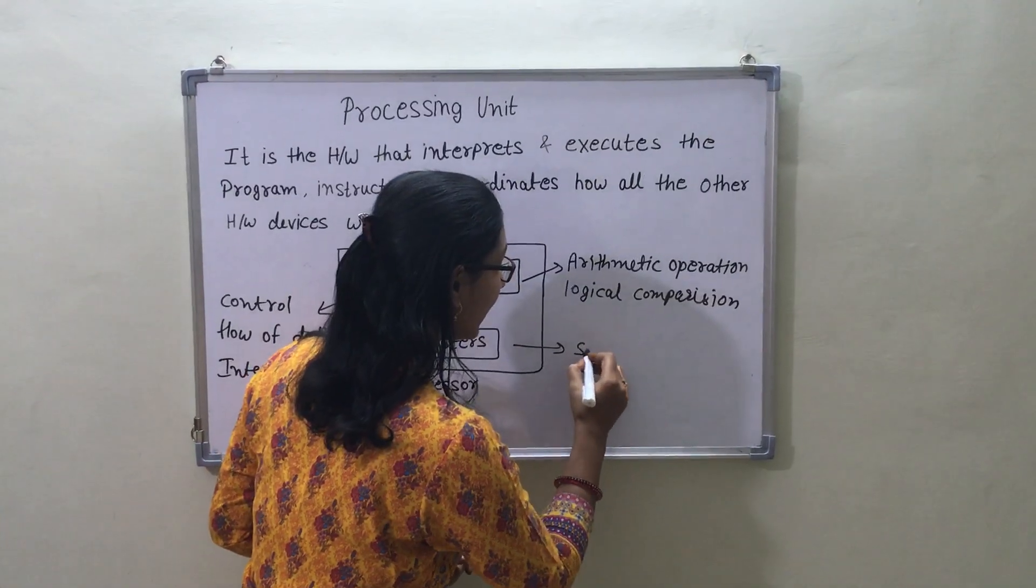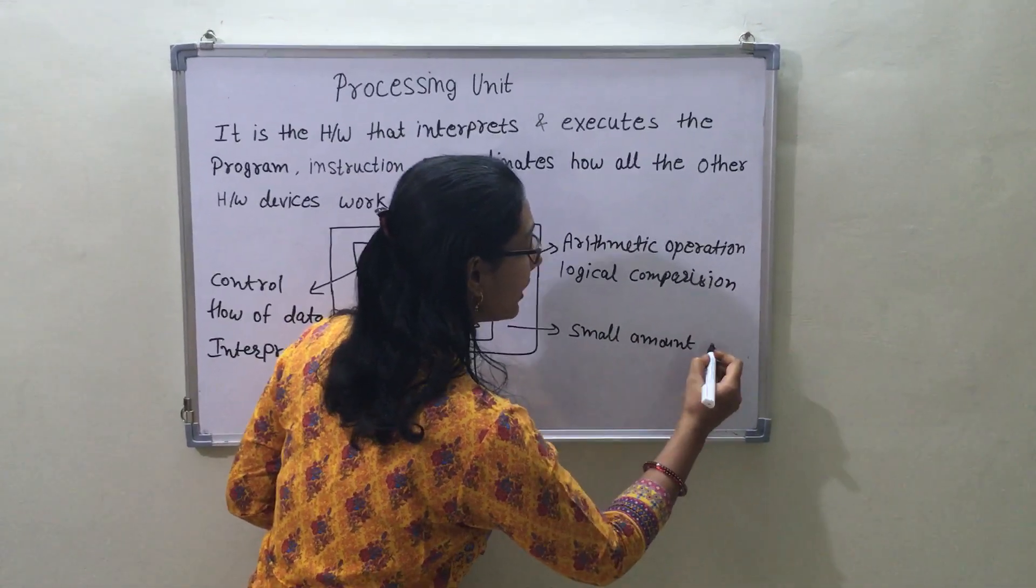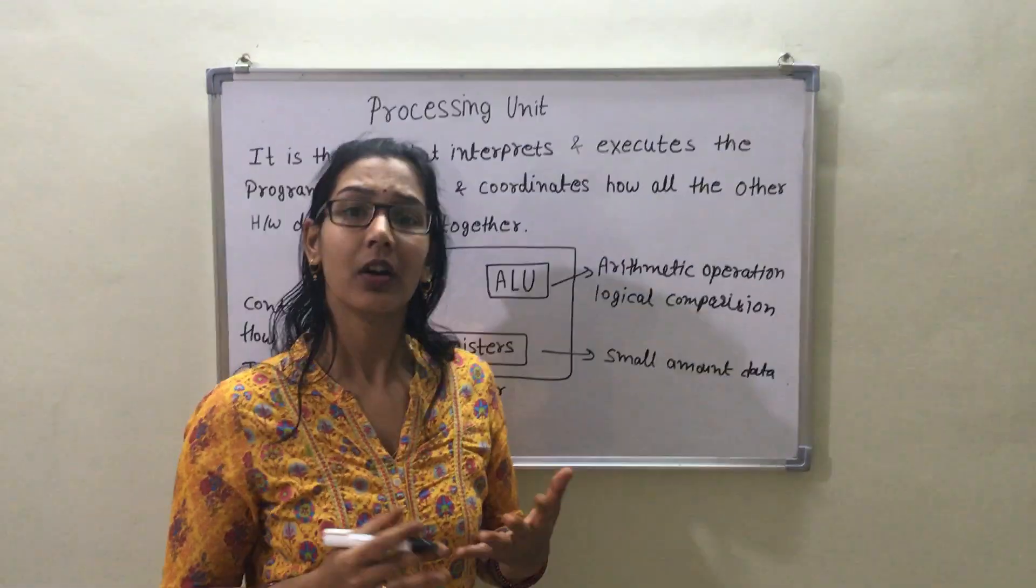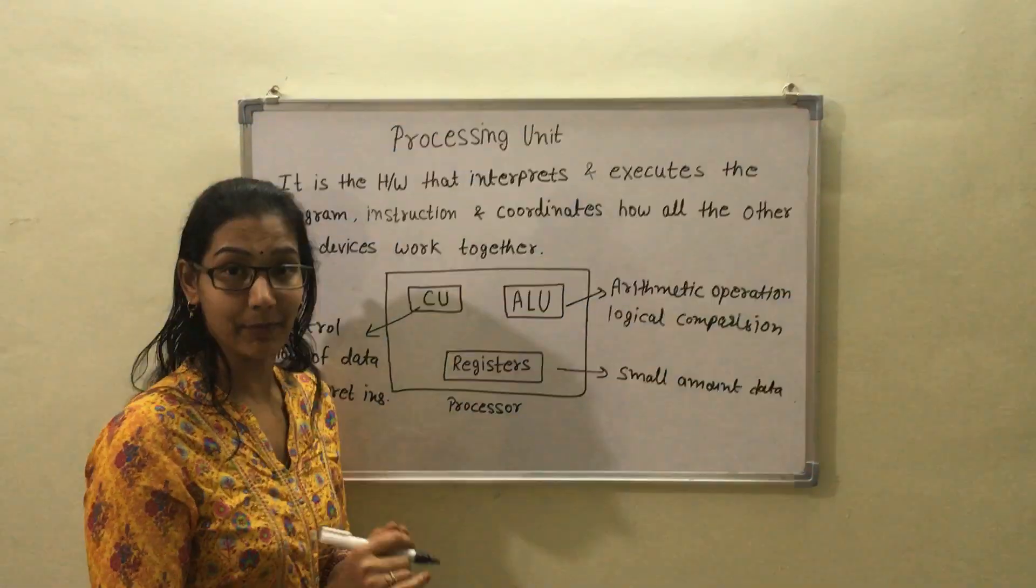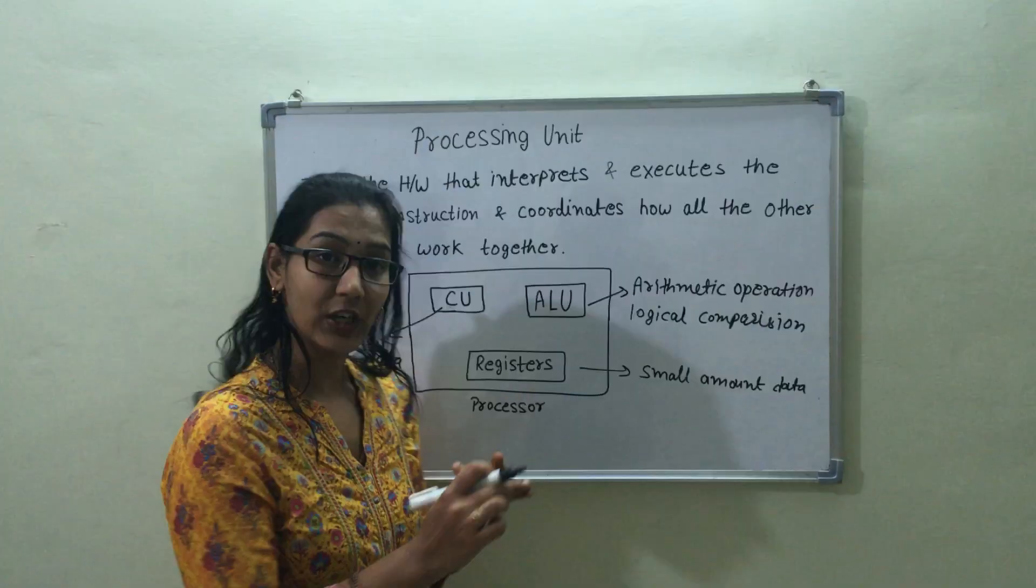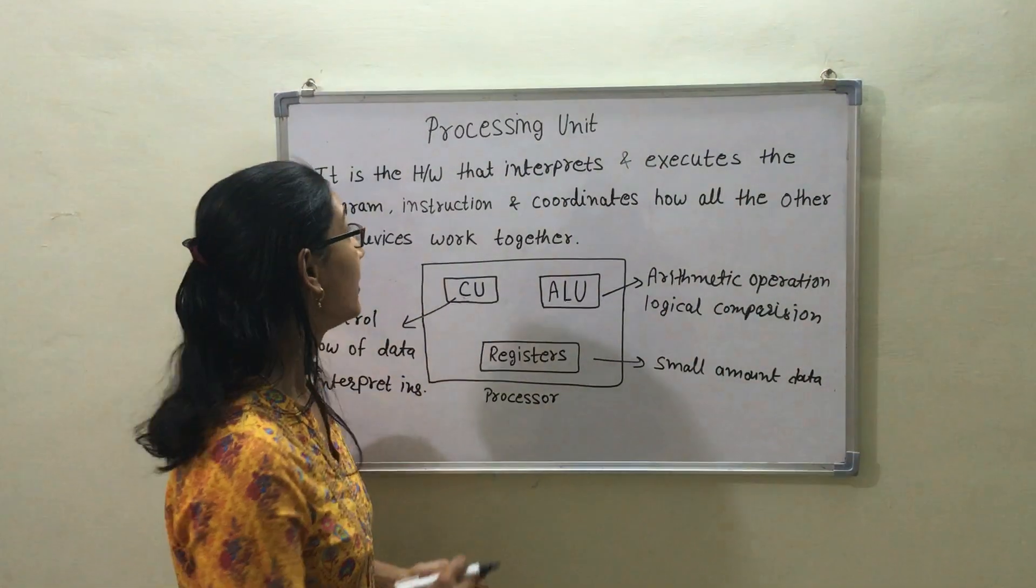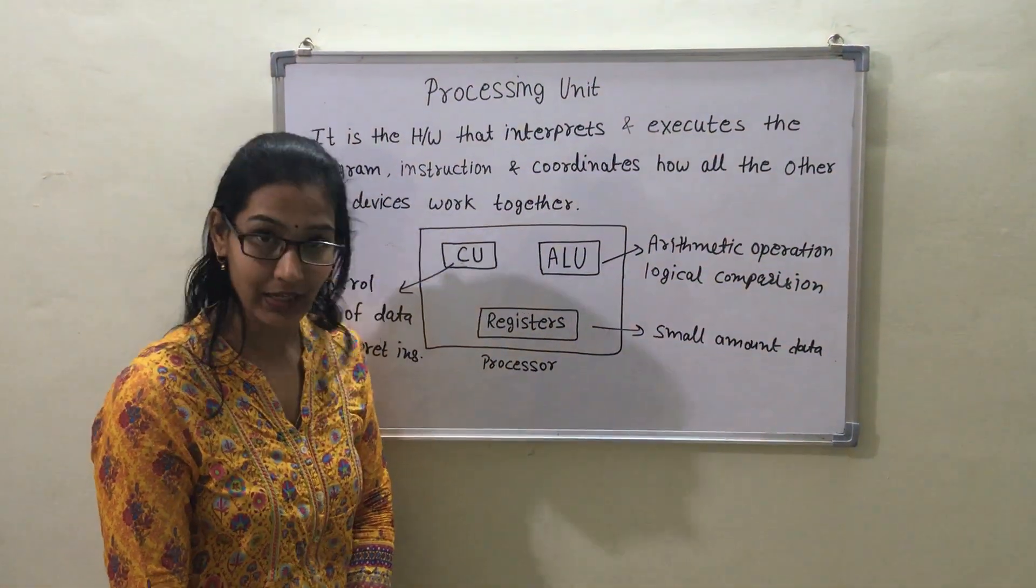Next is registers. Registers are high-speed memory in CPU for storing small amounts of data, like 32 bits or 64 bits. Registers have three parts: accumulator, storage register, and address registers. This is all about the processing unit. Thank you.